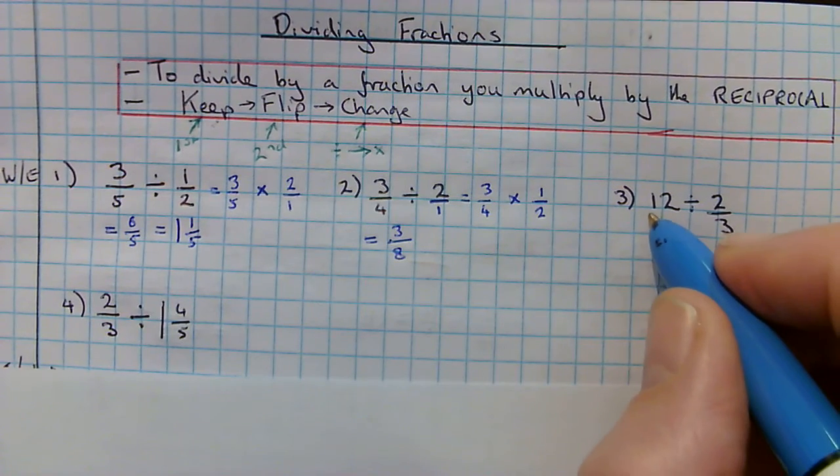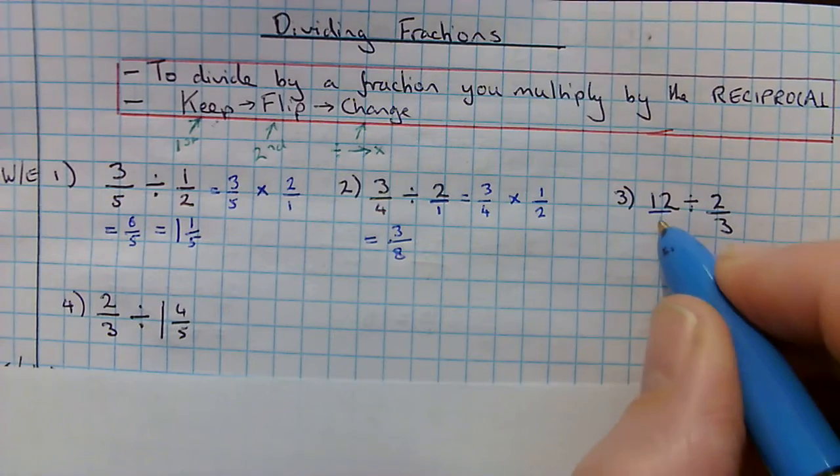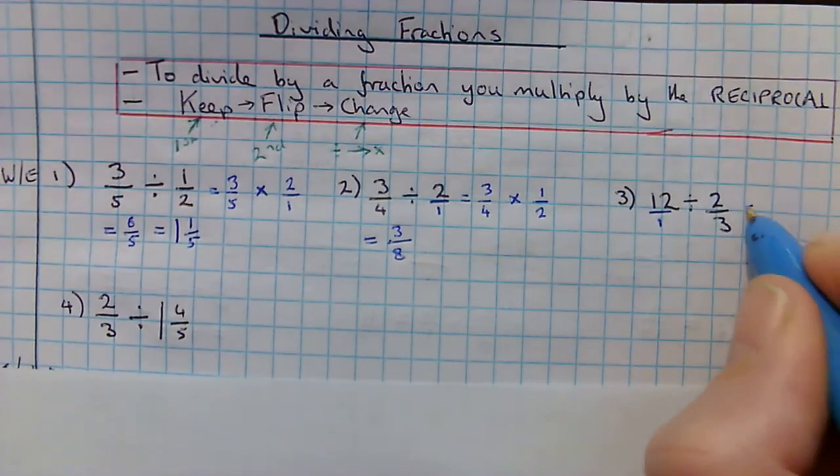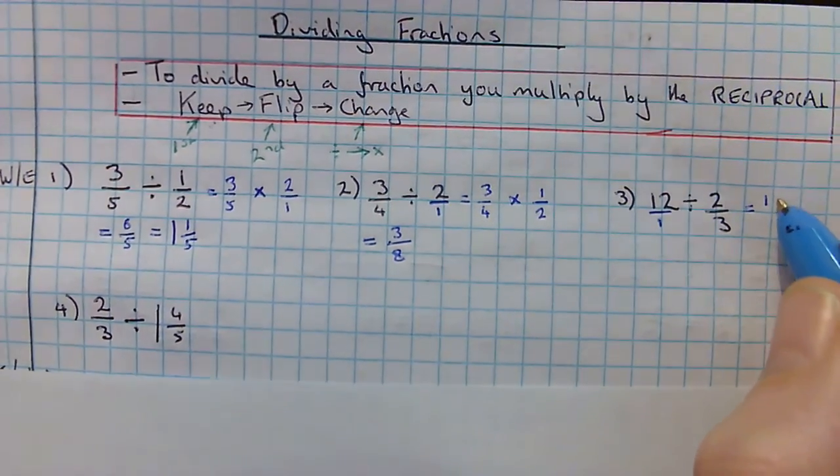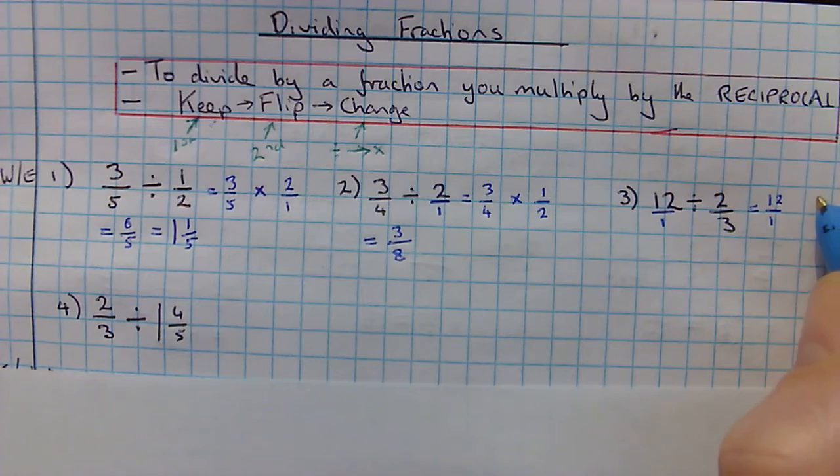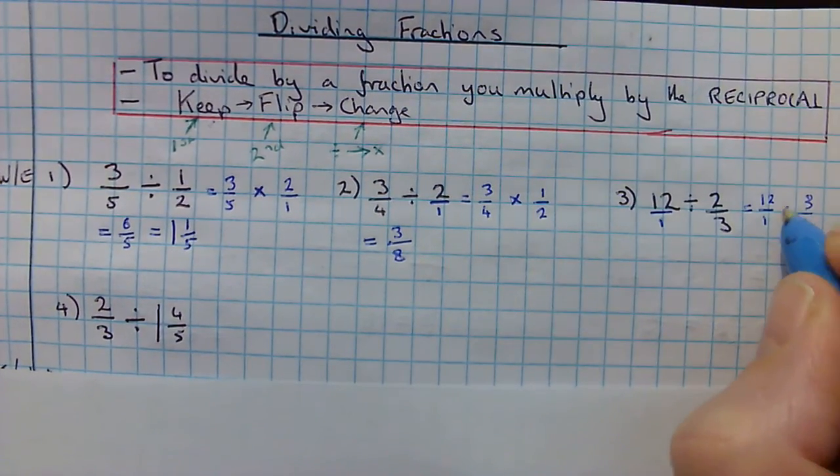Again, 12 divided by 2 thirds. So here, I'm going to write that as 12 over 1. I'm going to rewrite the first fraction. It's going to give me 12 over 1. Flip my second. It's going to give me 3 over 2. Change my divide to a times.